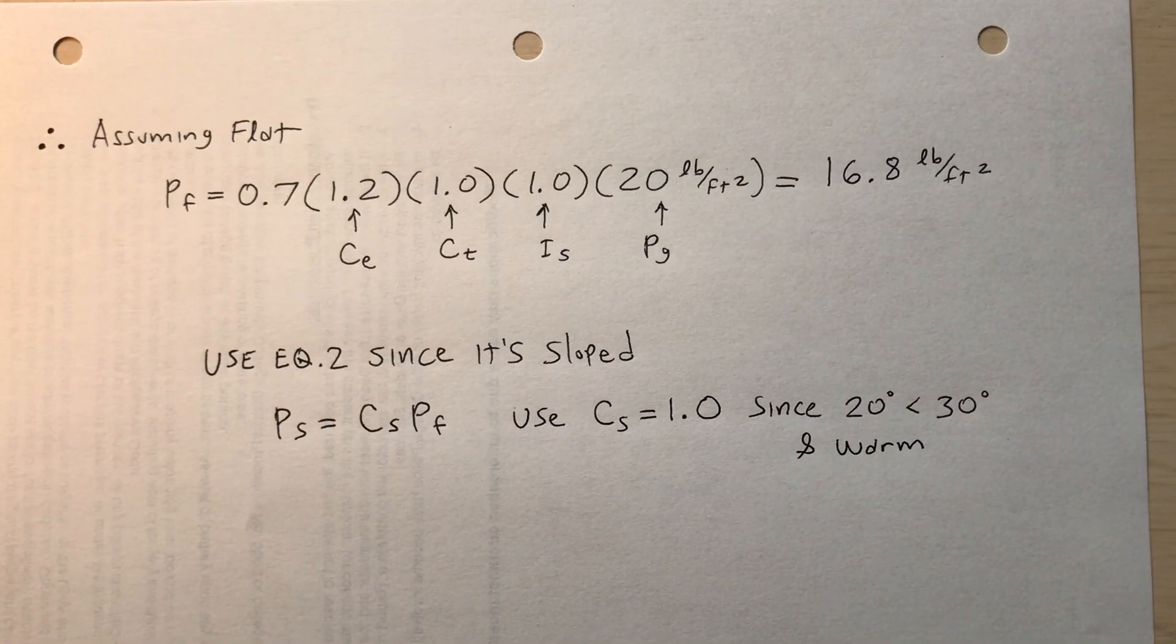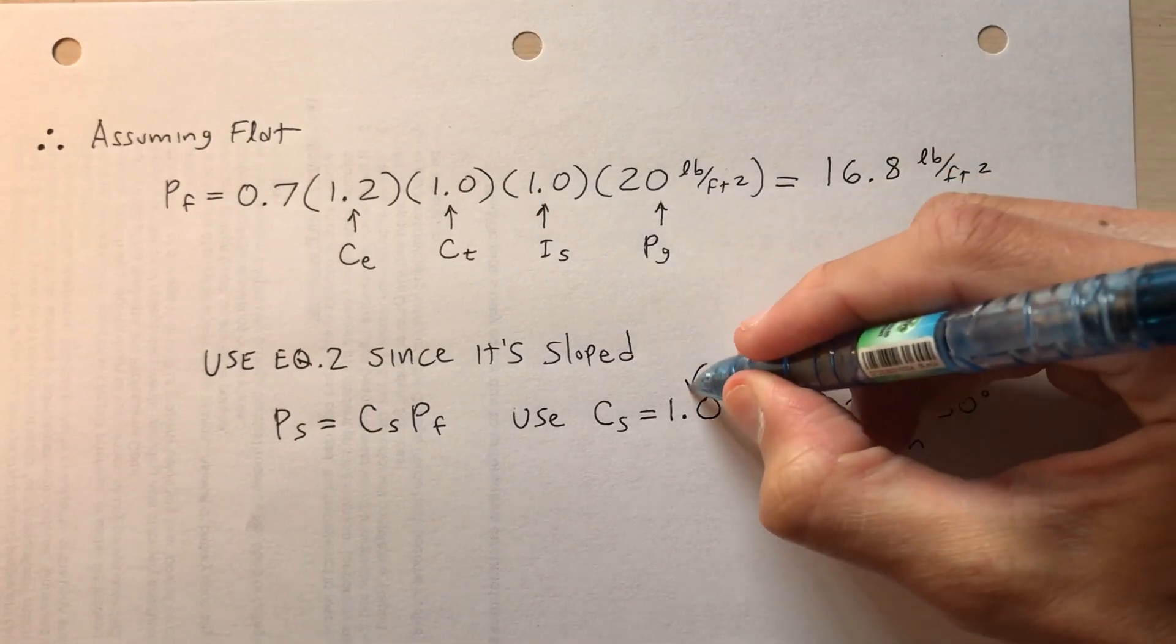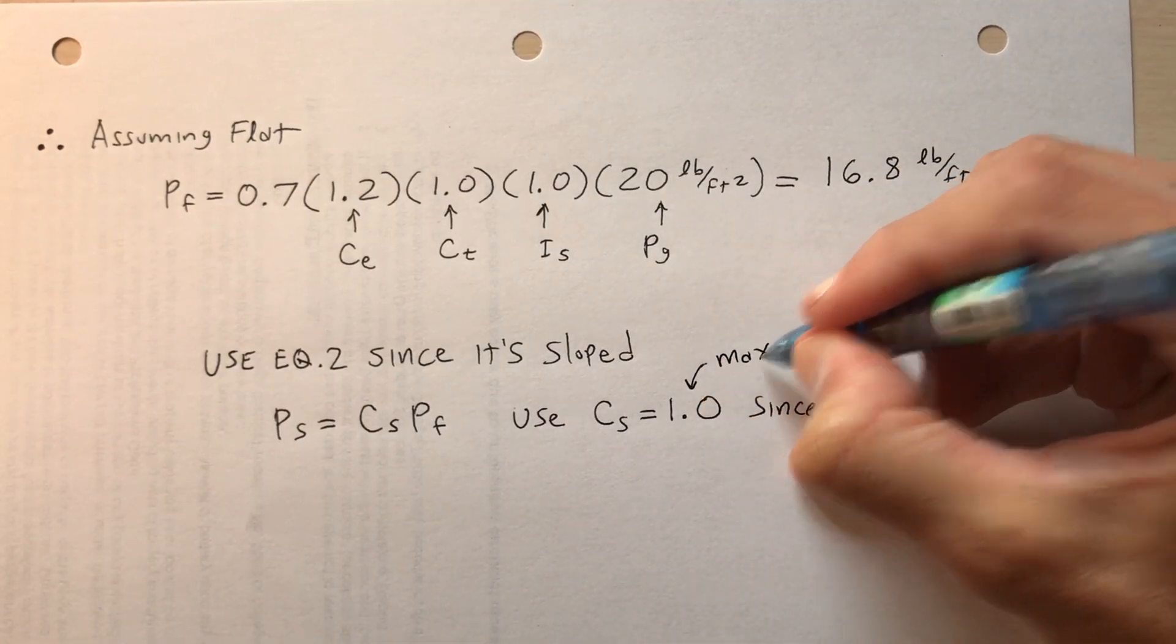Okay, so I say use equation two since it's sloped. So p_s is c_s times p_f. The c_s in this case would be 1.0. 1.0 is actually the maximum value that would be allowable for that particular coefficient.